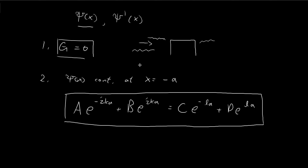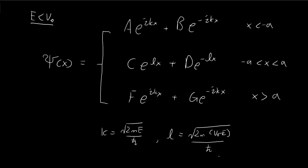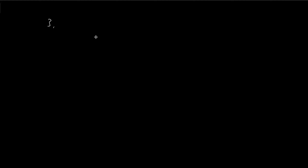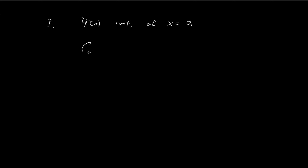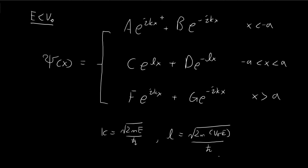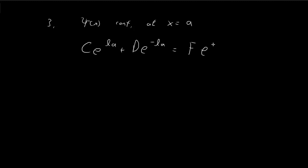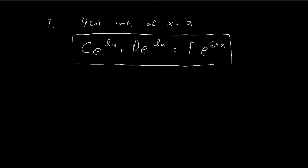We can derive another restriction by analyzing continuity at x = a. Substituting x = a gives us c times e to the power of la plus d times e to the power of negative la on the left-hand side. Since g = 0, on the right-hand side we only have f times e to the power of ika. This is another restriction from the continuity requirements.